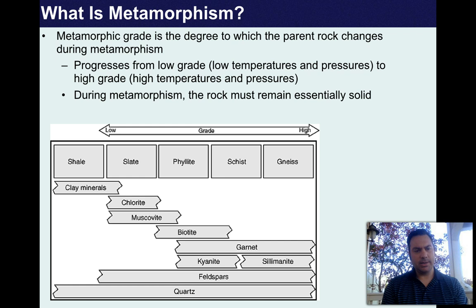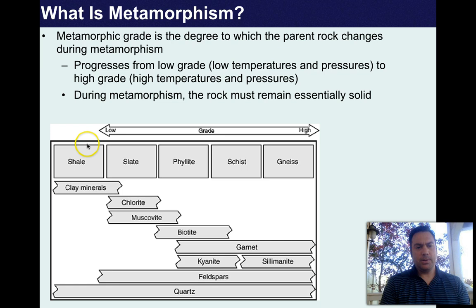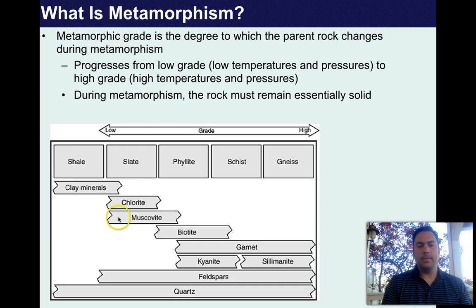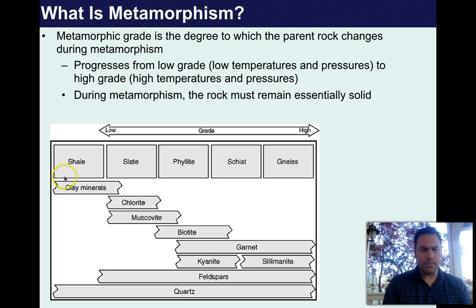Shales are made predominantly out of clay minerals and quartz, formed from the weathering of other types of rocks through the rock cycle. If you put shale under low-grade metamorphism — a little heat and a little pressure — it will alter into a type of rock called a slate. In a slate, clay minerals alter from kaolinite into things like chlorite and muscovite. And notice the feldspars come back when you go from shale to slate — feldspars are a relatively high-pressure, high-temperature mineral that don't form on the Earth's surface.